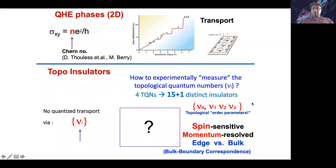There is a response function aspect — you can do magneto-electric response and watch its quantization, which gives you one invariant. But for the remaining invariants, there is no response function connection. It's only spectroscopy that can give you a complete description of the 3D topological state.